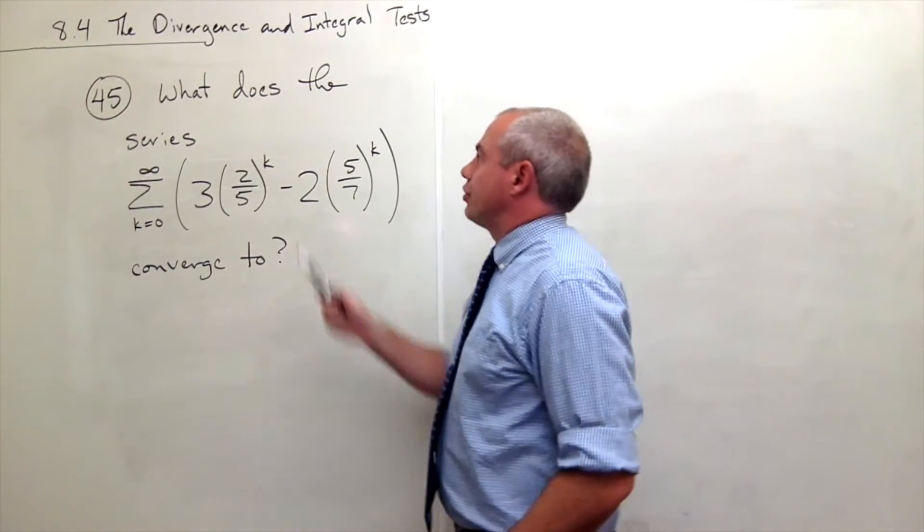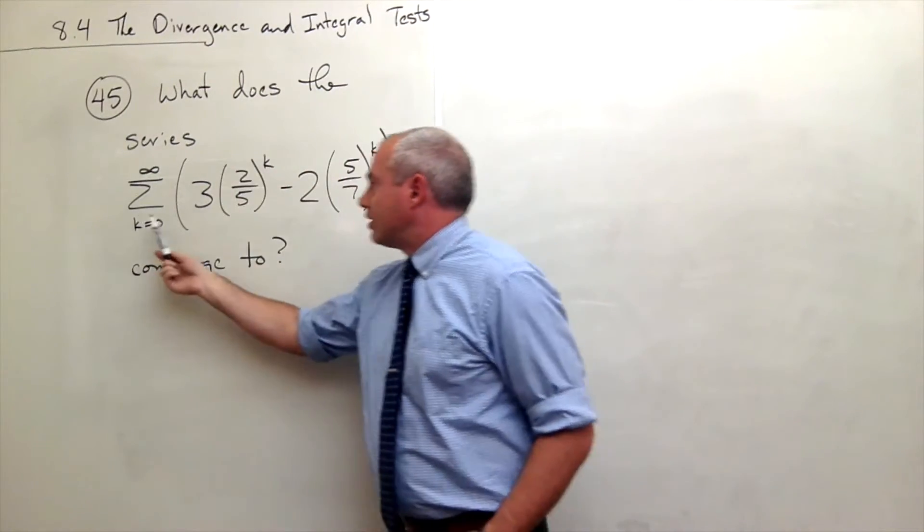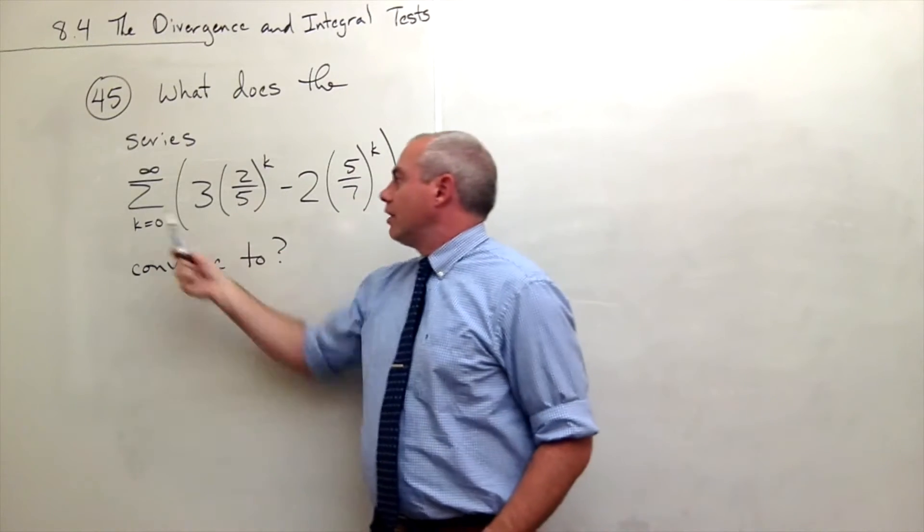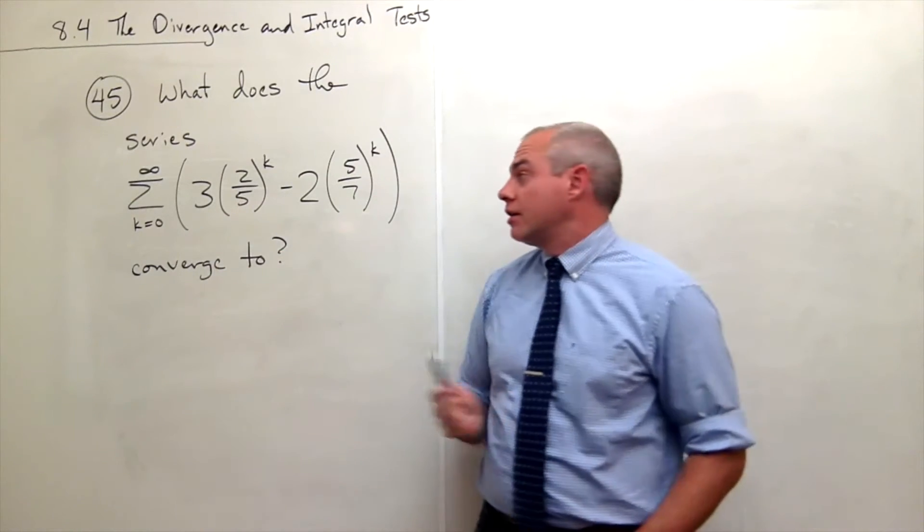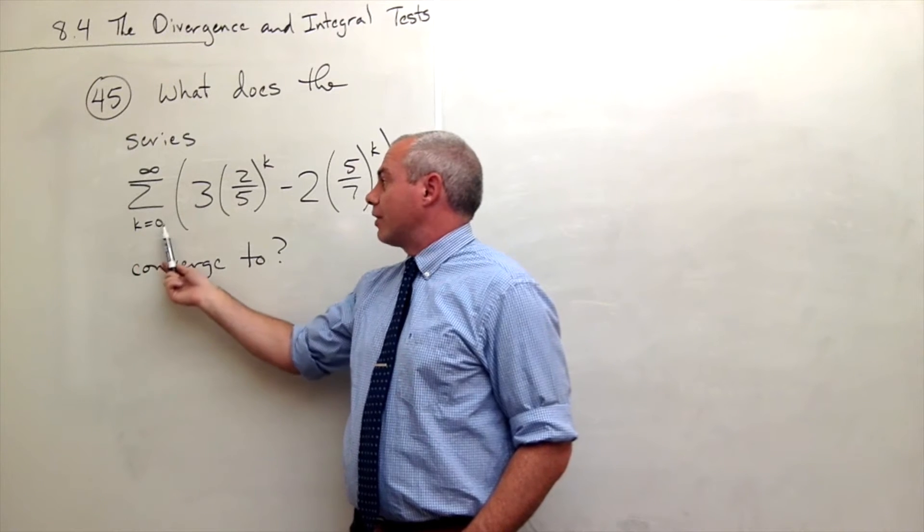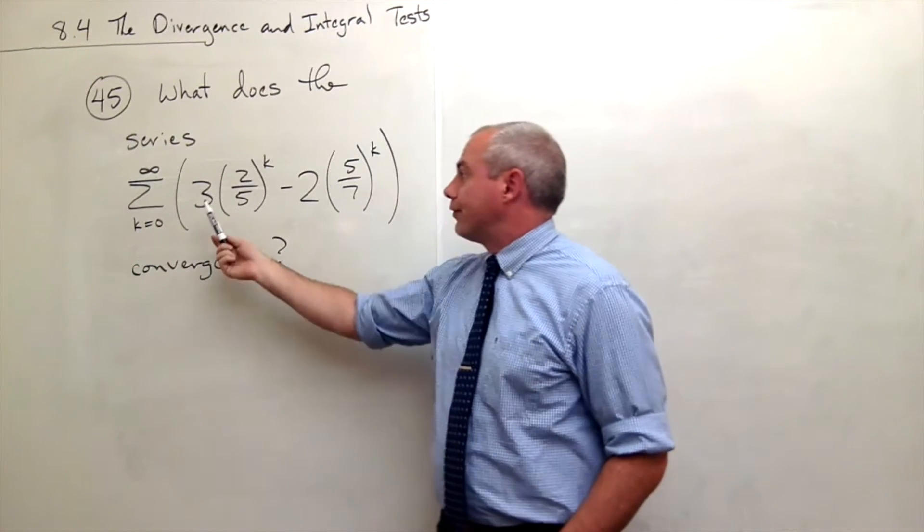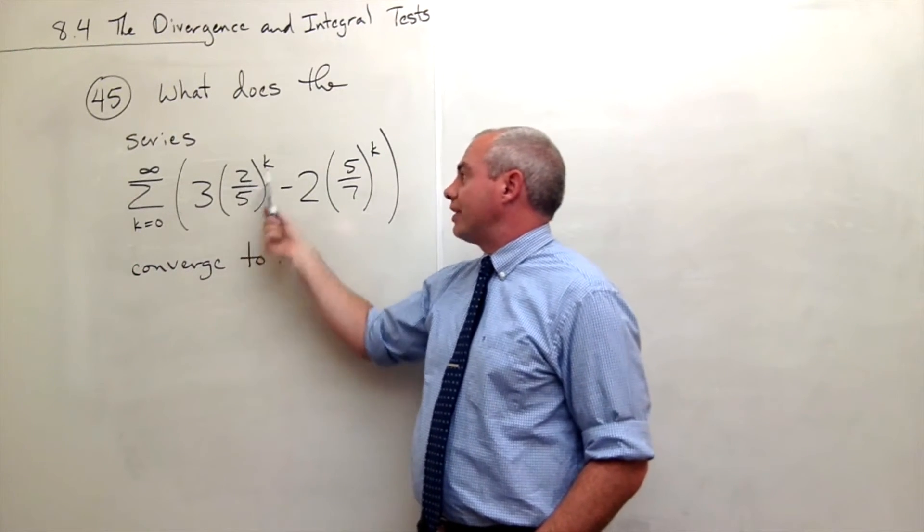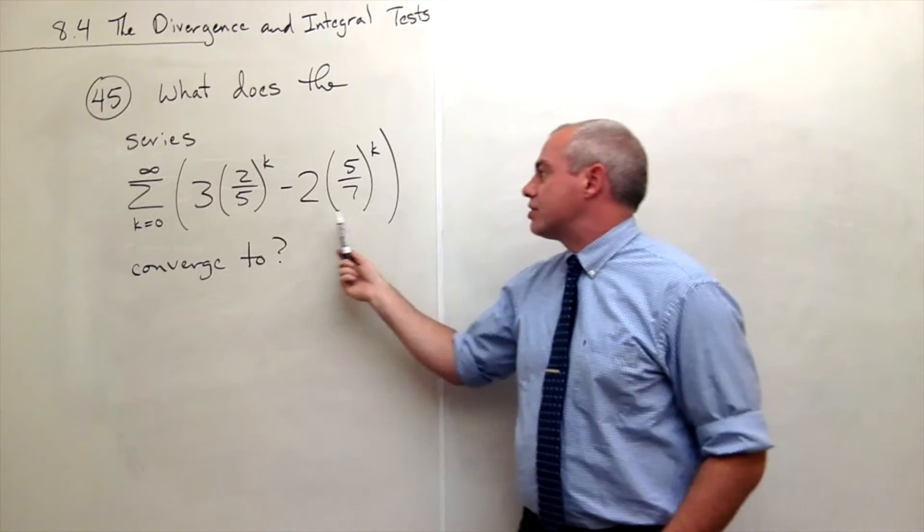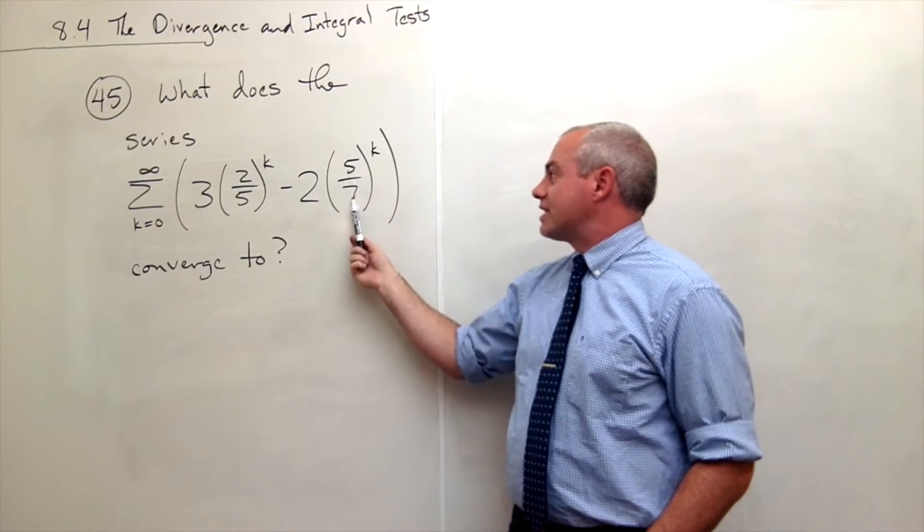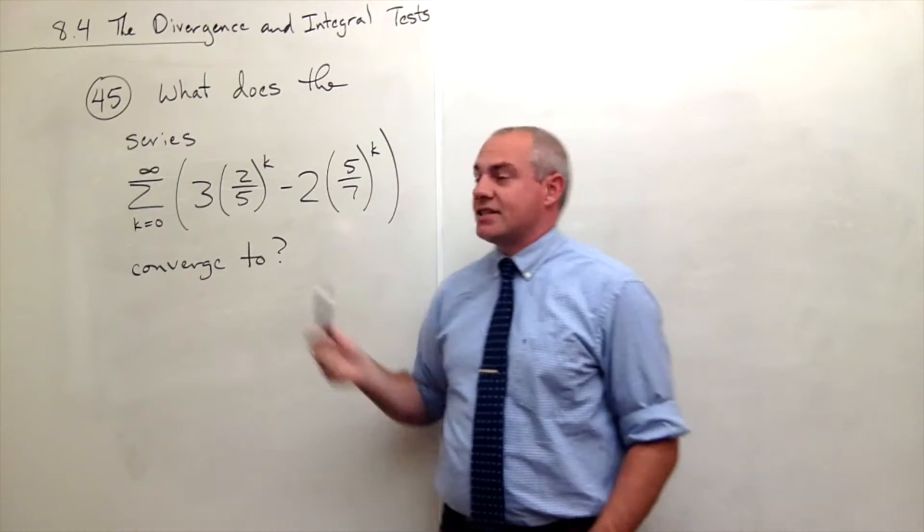we'd like to answer the question, what does the series—and you can see we've got kind of a complicated series here—it's the series from k going from zero to infinity of three times two-fifths to the k minus two times five-sevenths to the k, what does that converge to?